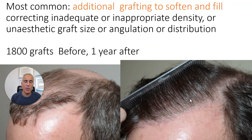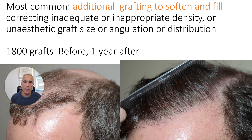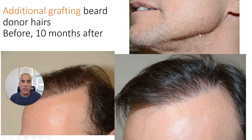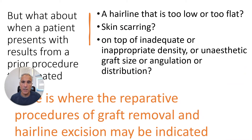The most common approach to repairing these is by performing additional transplants. We're able to basically create a new hairline, irregularity, and better density — and this is a before and after at one year. When there's not enough donor hairs, we rely on beard hairs. This was restored before and 10 months after with a beard hair transplant.